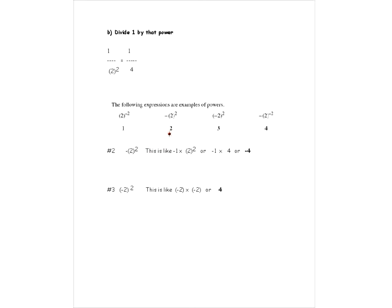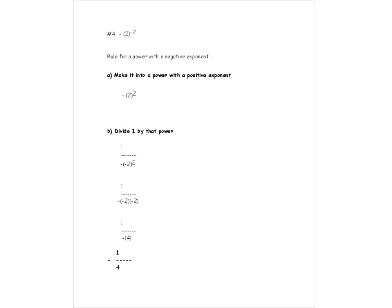Number 3 is (minus 2) to the exponent 2. That just means minus 2 times minus 2 — the exponent 2 says we're multiplying the base by itself twice. When we multiply minus 2 times minus 2, it gives us positive 4, because a minus times a minus is a positive. So the answer for number 3 is 4.